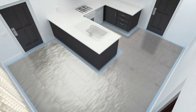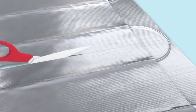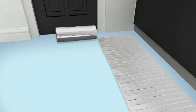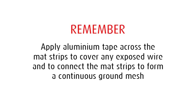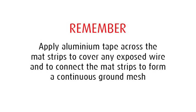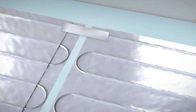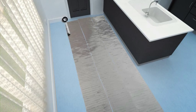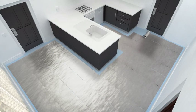The foil heating system can be cut and turned and modified to fit to a specific area. Never cut the heating wire and be careful that the ground braid that surrounds the heating conductors remains intact. When you cut the foil, apply aluminum tape across any exposed heating cables between two adjacent heating panels, ensuring that there is a continuous ground mesh.